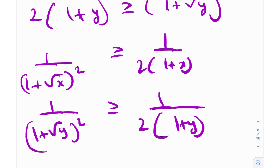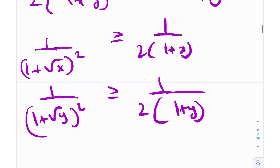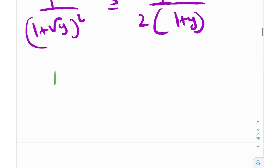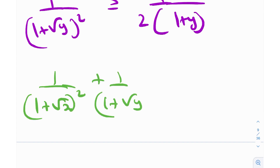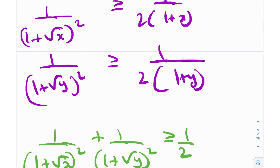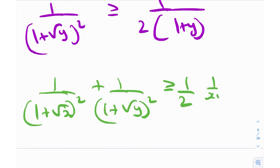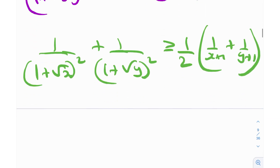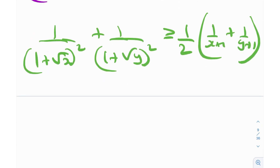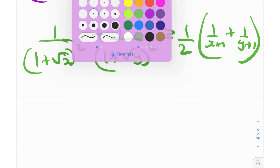Adding those two quantities: 1/(1 + √x)² + 1/(1 + √y)² ≥ (1/2)[1/(x+1) + 1/(y+1)]. Now I can use the AM-GM inequality. To remind you: (a + b)/2 ≥ √(ab) — this is the AM-GM inequality for two numbers.